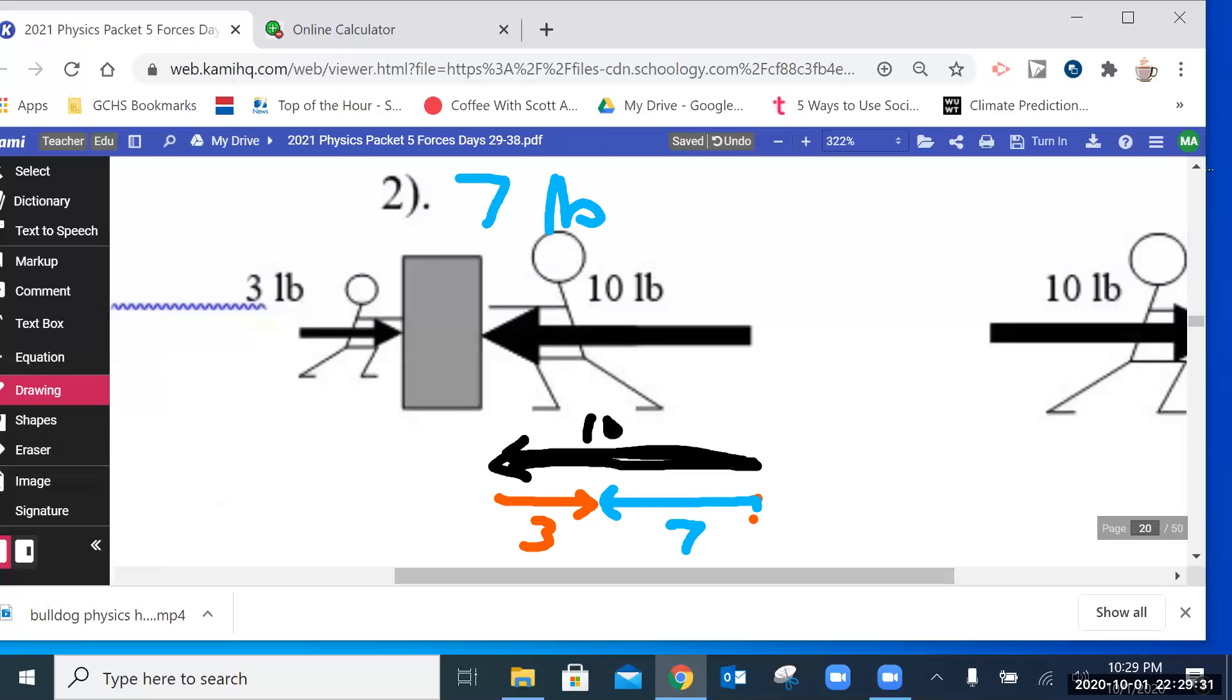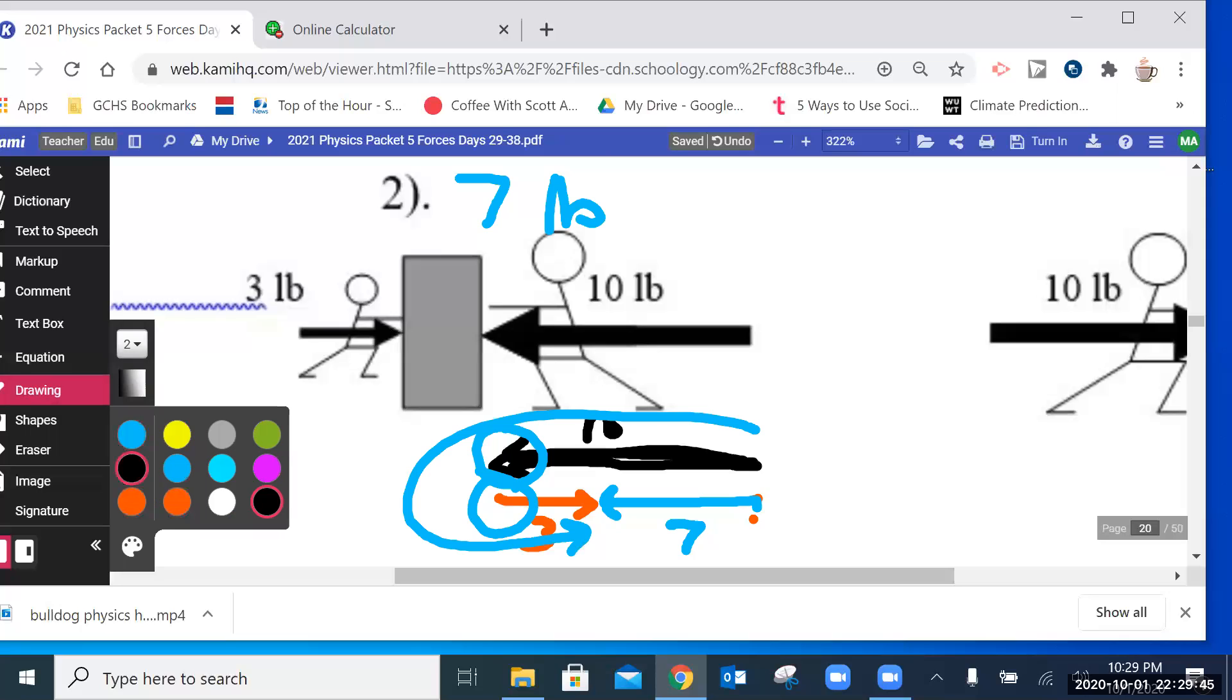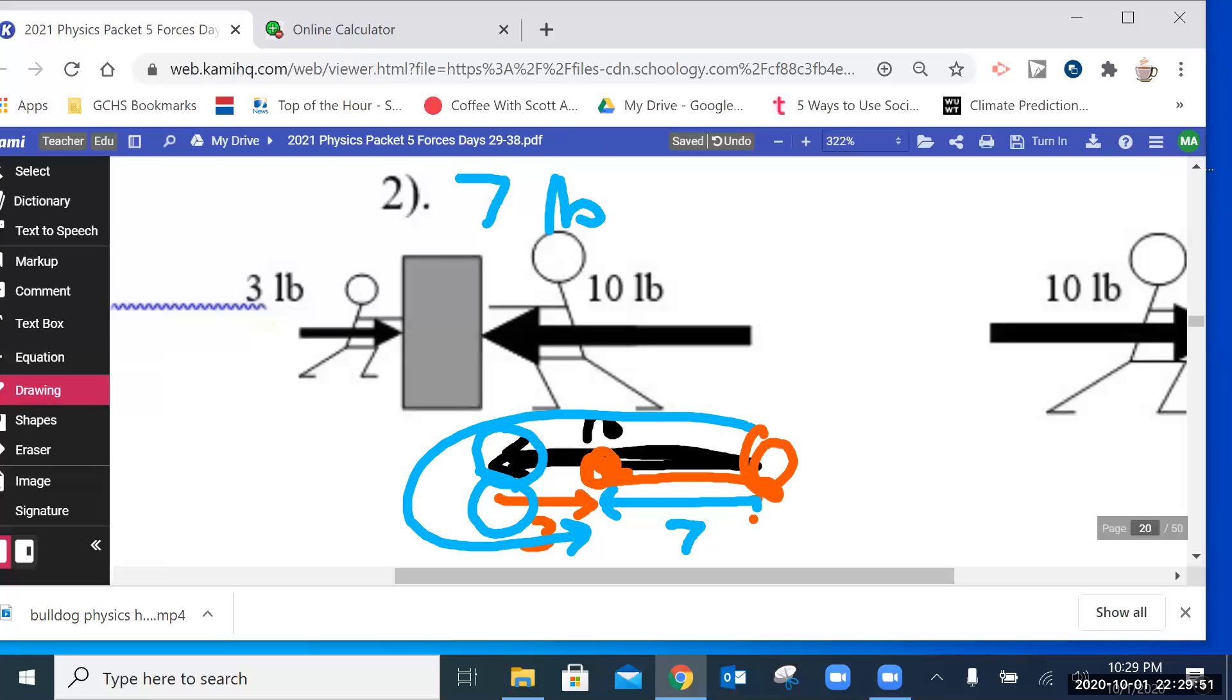So once again, you draw the two vectors head to tail. The head of one next to the tail of the other. And then that makes a train, so to speak, of vectors going around. And the answer will always be from the beginning of your train to the end of your train in that direction, from the beginning to the end.